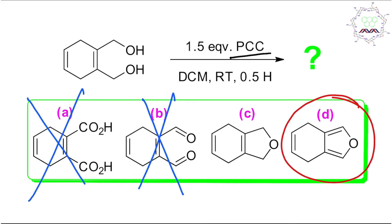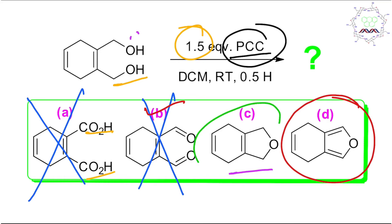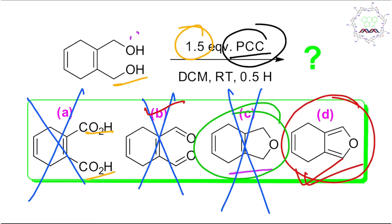So option B is gone and option A is gone, because alcohol to aldehyde or carbonyl requires one equivalent of PCC. A second equivalent is not possible since that much is not given, and in option A two groups are oxidized — that's not possible either. If you look at option C, it is a simple dehydration — a diol dehydrated to produce a tetrahydrofuran-type furan derivative — meaning no oxidation occurred, but we know PCC is an oxidizing agent. So that option is gone too. What is left is option D, and using common sense and knowledge you can arrive at the right answer.